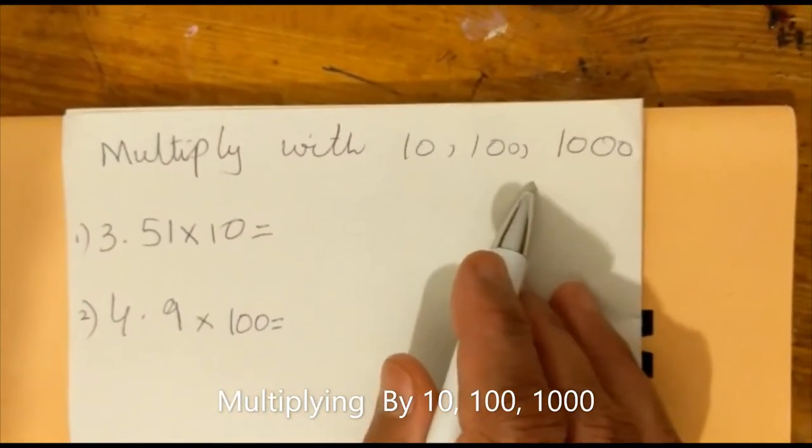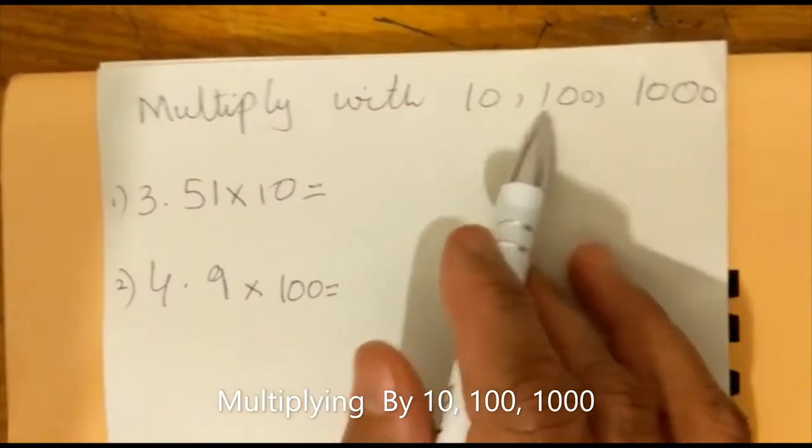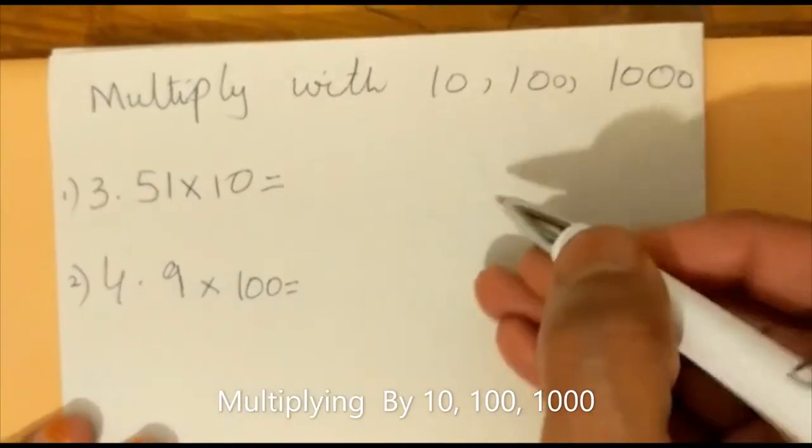Multiply with 10, 100, 1000, or any other number like this. Here we have a question: 3.51 times 10. Let's make a column.